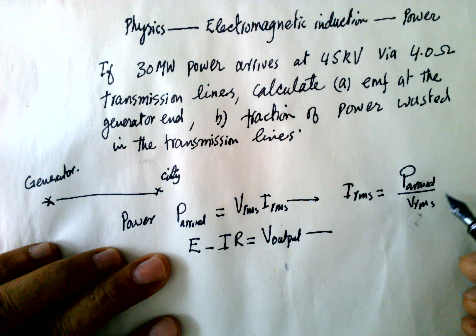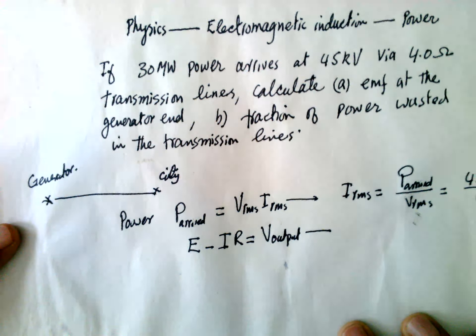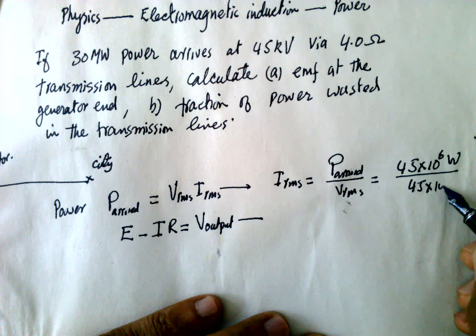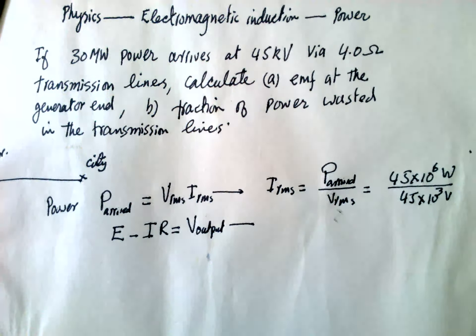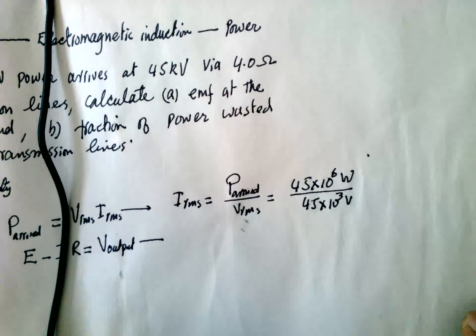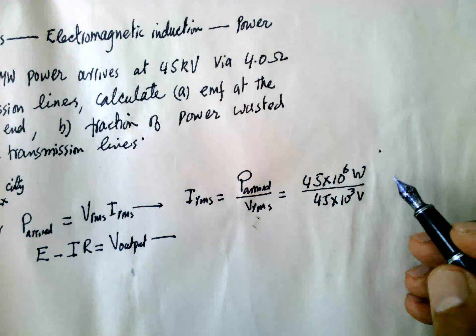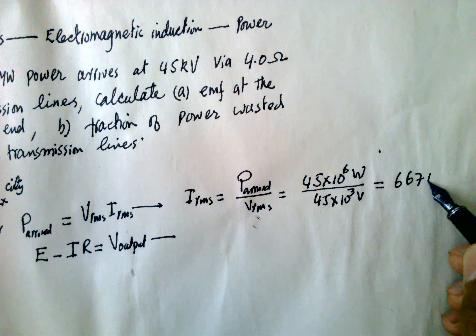Which is equal to 45 megawatt, 10 to the power 6 watts, over V_rms 45 kilo, 10 to the power 3 volts. And this will give us the value of the current which is equal to 667 amps.